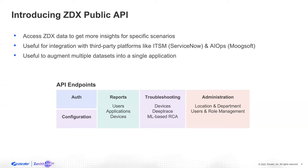Today our API endpoints have five different modules. The first is the authentication module where everything starts. Once you generate a secret, you can authenticate and we respond with a pair of tokens. For any subsequent API calls, you use this token pair to get the data you're looking for. In the report section, we allow you to pull in information for a specific user, application, or device. Troubleshooting allows you to run deep traces and Y Engine analysis, and administration provides lookup tables to help you further filter your API calls.